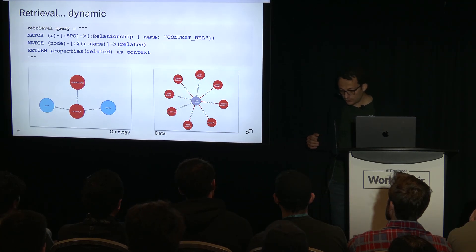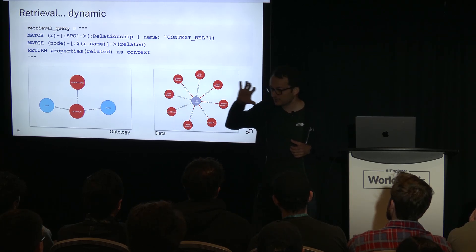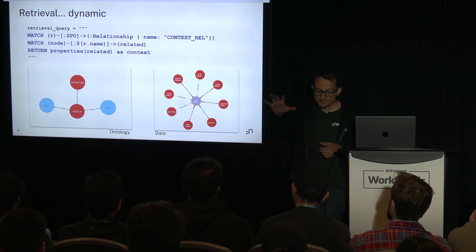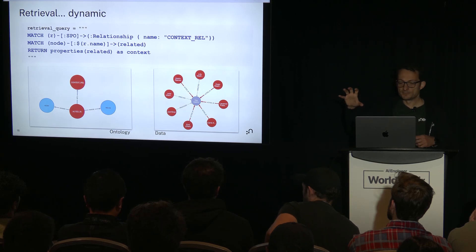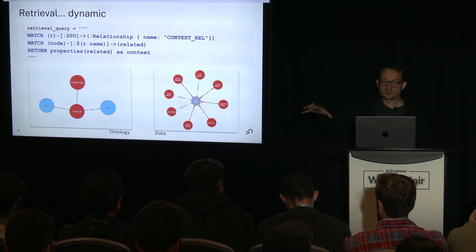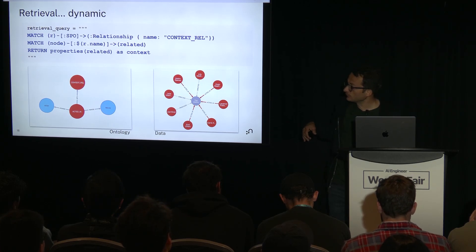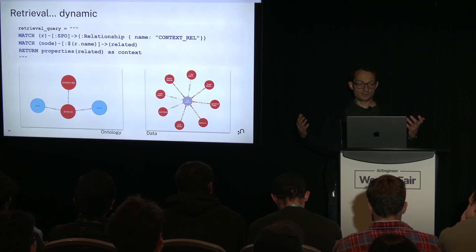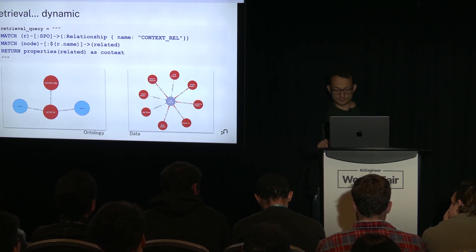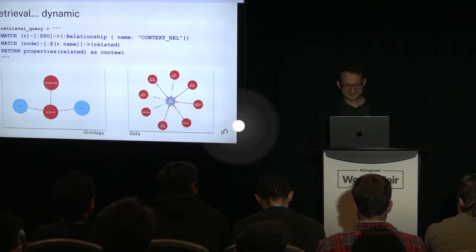So the two takeaways: first, ontologies for knowledge graph creation as an implementation-agnostic data model; and second, storing the ontology in the graph can help us drive dynamic behavior in our retrievers. That's what I had for you today — thank you very much, and happy to take questions or continue the conversation at our booth.